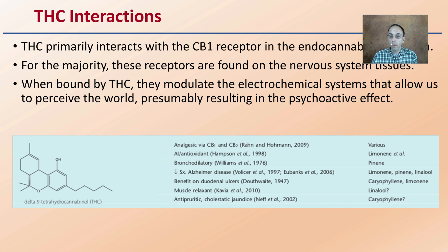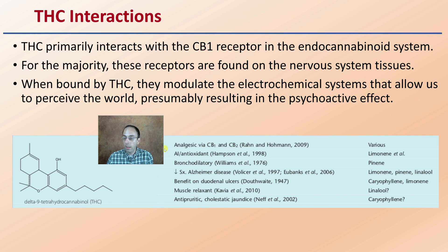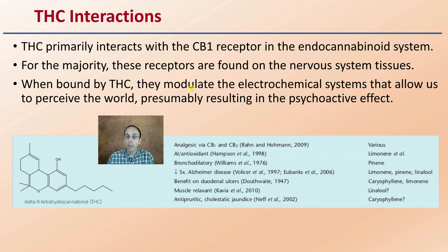Looking at THCA interactions: THCA particularly interacts with the CB1 receptor in the endocannabinoid system. The majority of these receptors are found in nervous system tissues, and when bound by THCA, they modulate the electrochemical systems that allow us to perceive the world, presumably resulting in that psychoactive effect.